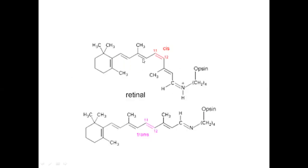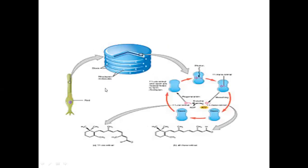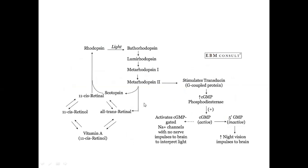In the cis form of retinal, there is a bent carbon chain. As soon as light strikes, this cis form becomes the trans form — the carbon chain straightens — and this results in generation of an action potential. In the rods, stacked vesicles on the upper portion contain the cis-retinal. On striking of light, the cis-retinal becomes trans-retinal, generating the action potential. The cis-retinal is present in the form of rhodopsin, which passes through various intermediate forms before yielding trans-retinal.